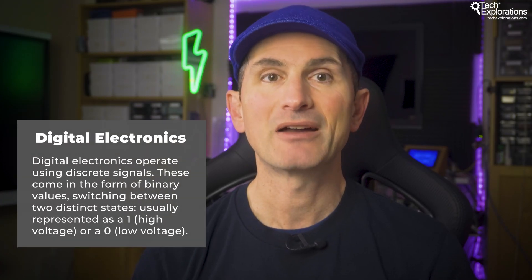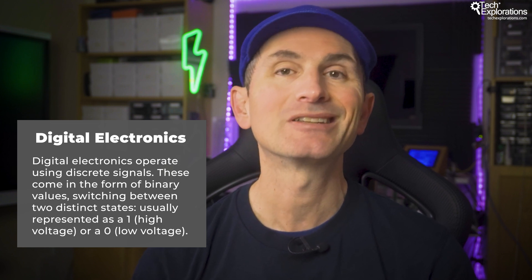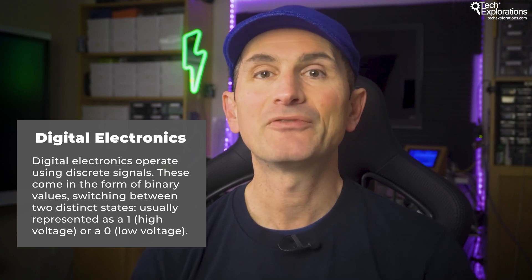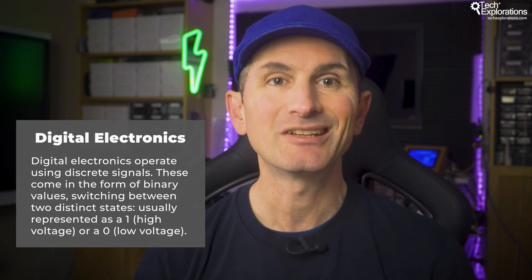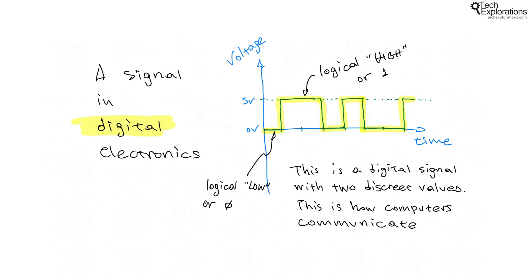Digital electronics, in comparison, operate using discrete signals. These come in the form of binary values, meaning they switch between two distinct states, usually represented as a 1 for the high voltage or a 0 for the low voltage. Digital systems depend on these on-off states, which constitute the fundamental language of computers and digital communication systems, understanding and processing complex data with remarkable speed and precision.